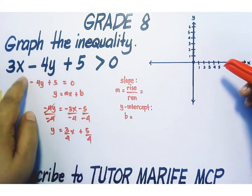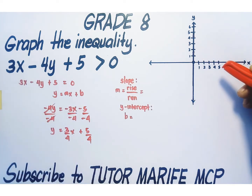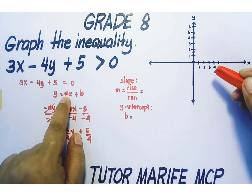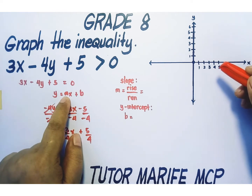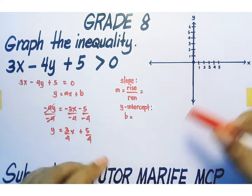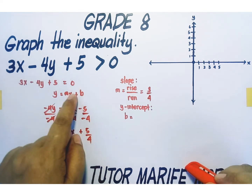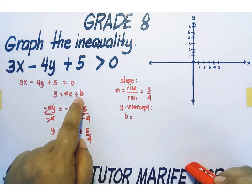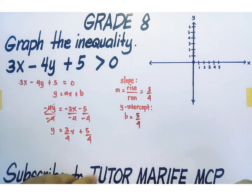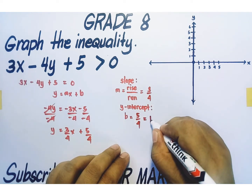After converting the equation of the boundary line into slope-intercept form y equals mx plus b, we are now going to identify the slope and the y-intercept. The slope is the numerical coefficient of x, represented by m. From this slope-intercept equation, m is equal to 3/4. The y-intercept is represented by b — it is the constant term of the slope-intercept equation. So our b is equal to 5/4, which converts to the mixed number 1 and 1/4.